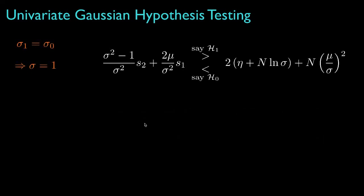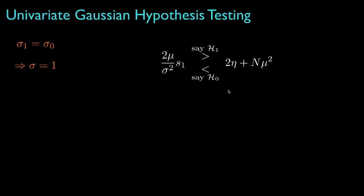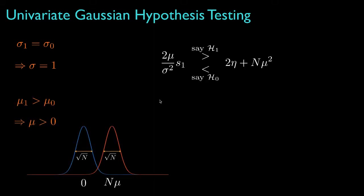Sometimes we'll encounter a situation when the variances are equal. In this case, the parameter sigma will be equal to 1, so that the coefficient that multiplies S2 would be 0, as well as one of the terms in the decision threshold. This results in a decision rule that depends only on the decision statistic S1. Now, if mu_1 is greater than mu_0, then the parameter mu will be greater than 0, and the densities for the test statistic might look like this, where the blue line shows the density under hypothesis 0 and the red line shows the density under hypothesis 1.